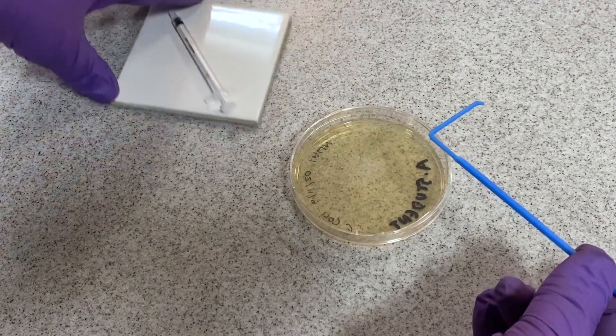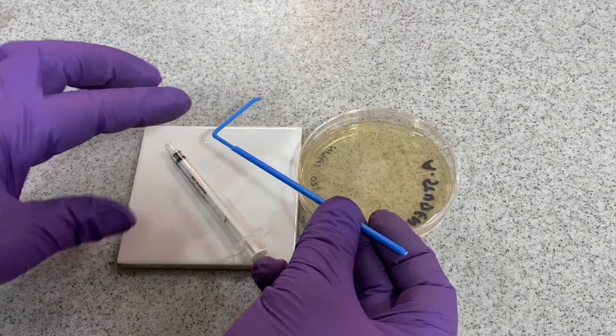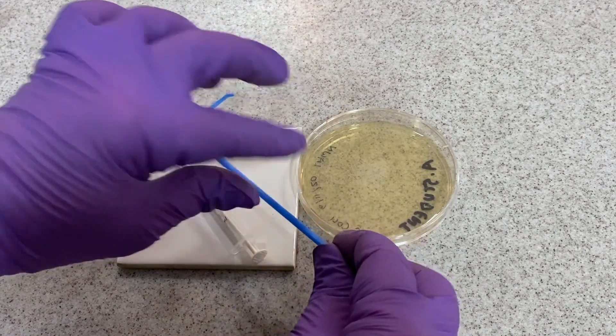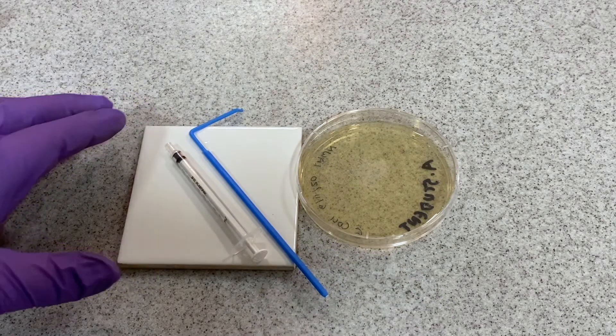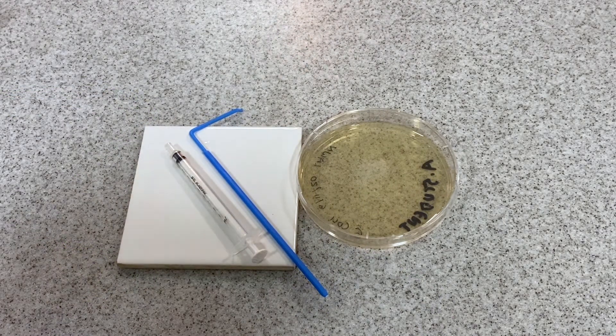The spreader and the 1ml syringe that have been in contact with the bacterial sample should be placed on the white tile provided rather than the surface of the bench to prevent cross-contamination.